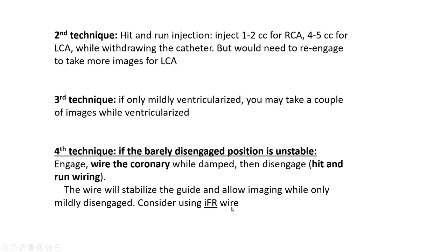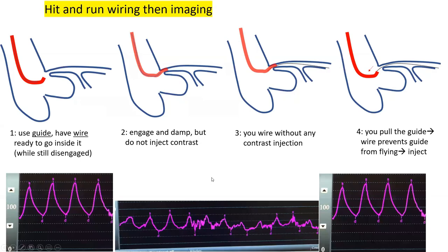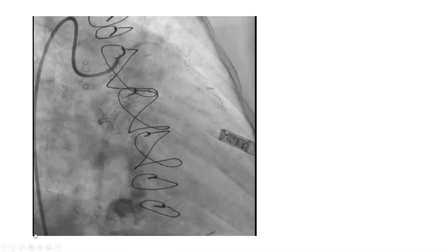Consider also using an IFR wire in those cases — this way you do two things at once: you get a great angiogram with a barely disengaged stabilized guide, and you get an IFR assessment while the guide is disengaged. To execute this: advance a guide in the aorta, advance a wire in it before engaging, having it ready to go. While in the aorta without ischemia, then engage, damp — you're ischemic — but quickly wire. Your ischemic time, hopefully, is brief. Do not inject contrast. Wire blindly. Then quickly disengage the guide. You get normal aortic pressure; the guide is stable thanks to the wire, and you can inject to properly delineate the ostium.